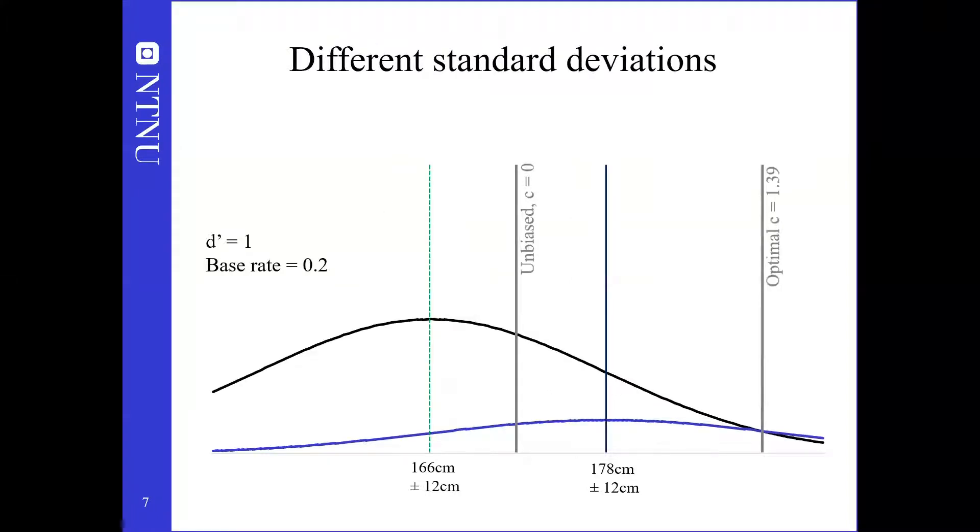This graphical method of finding the optimal decision criterion also carries through in changes in variance. With greater variance, the intersection point that defines the optimal criterion shifts to more extreme values, both in physical measurement and in terms of d' when scaled by the standard deviation. In simple terms, if there is a liberal or conservative bias, decreasing the d' will amplify the bias. This also illustrates how discerning the difference between two populations is more difficult when the standard deviation is higher.